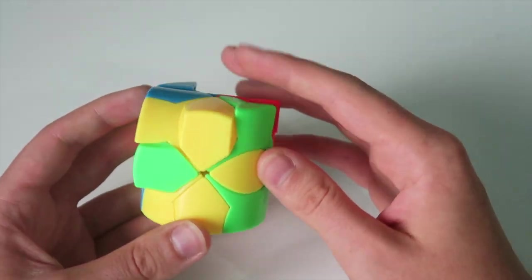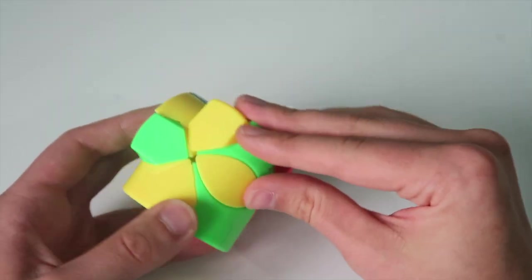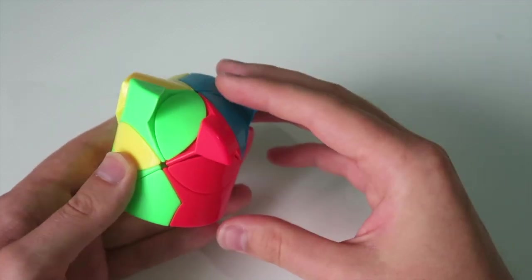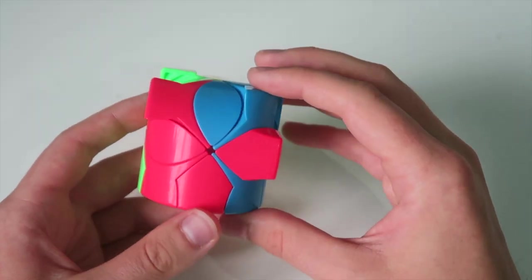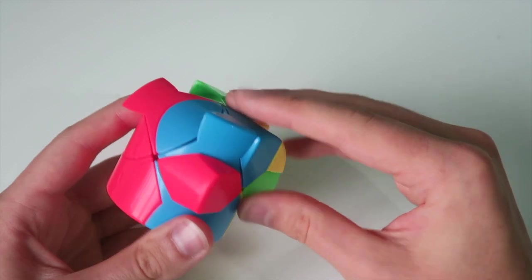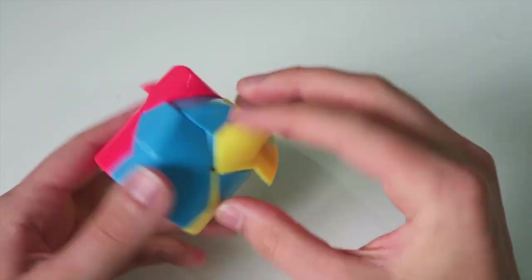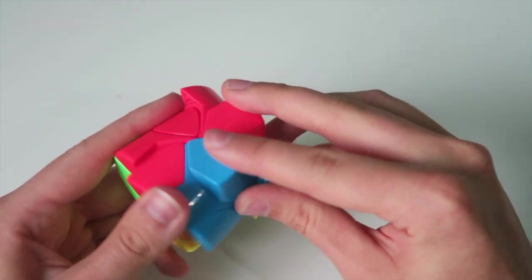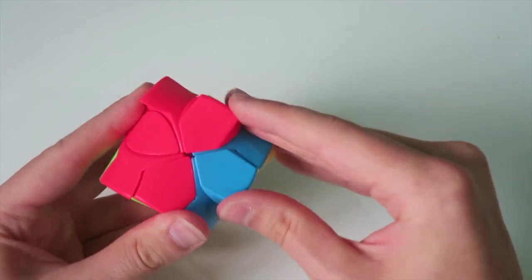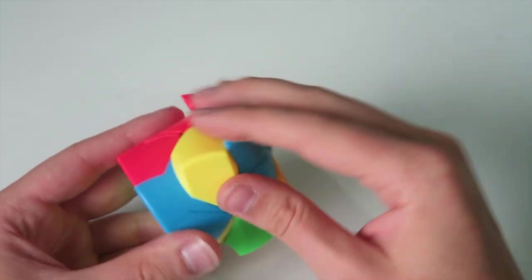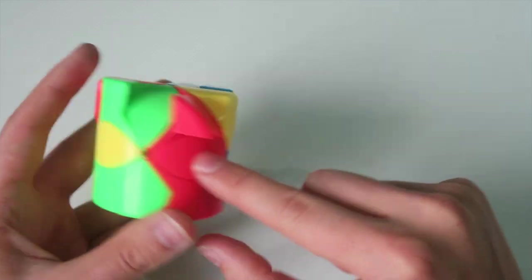This is where I think it's gonna get a bit confusing, this is the F2L stage now. So how am I gonna do this? I'm gonna put in the blue one right now, so that's going up here and slotting it in. The right one is already solved.